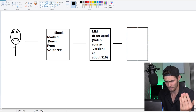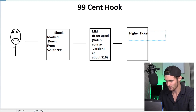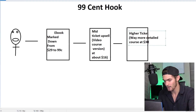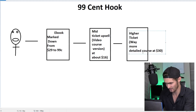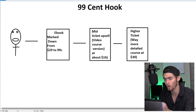This third part of the funnel — the higher-ticket, way more detailed course — you want to put this at about $30. Again, you want to make it seem like a super irresistible offer marked down from like $200 or $300 all the way down to $30. And again, because we've secured their credit card information on the first page, it's a click of a button and on impulse the transaction is made.